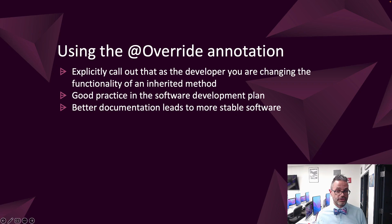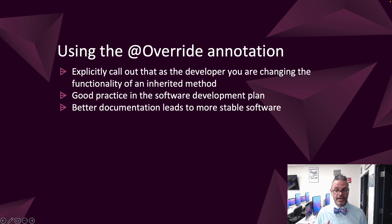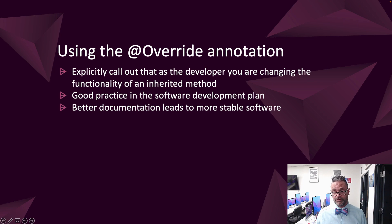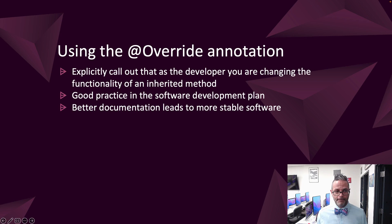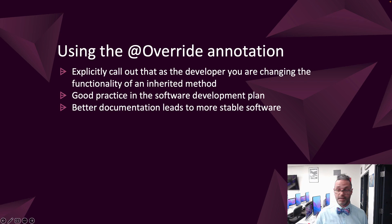I like using the @Override annotation because it explicitly calls out to myself as a programmer — and to anyone who reads my code — that I know I'm changing the parent class's method to fit the needs of this subclass. I always use it on my toString methods and any methods inheriting from a parent class. It explicitly tells the developer that you are changing the functionality of the inherited method, and it's good practice in software development. Better documentation always leads to more stable software. I hope this is a good overview of some of the more intermediate concepts of Java inheritance. Take a look at other videos and have a great time. Cheers, see you next time!